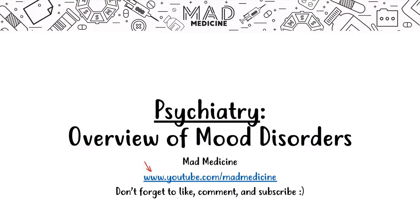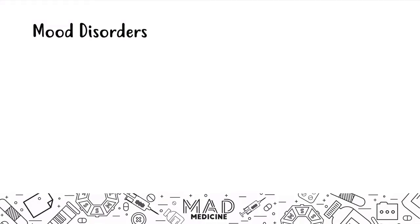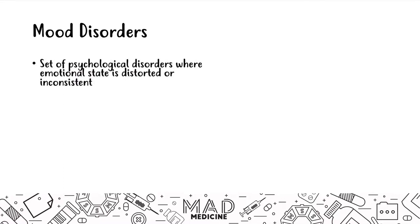Let's discuss mood disorders. Mood disorders are a set of physiologic disorders — and yes, I said that right. They are a set of physiologic disorders where the emotional state is distorted or inconsistent. This is important, especially the physiologic part, because we know from many examples in psychiatry and throughout medicine that your emotions are very closely tied to your physical health.